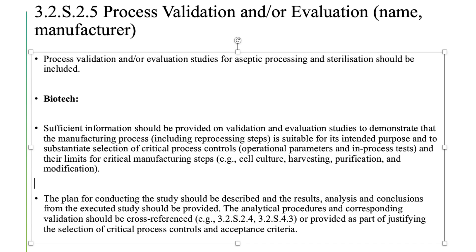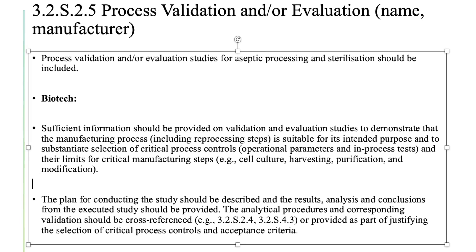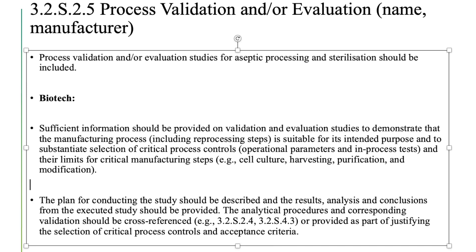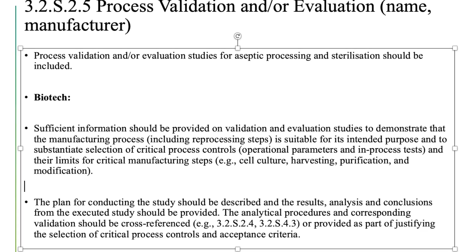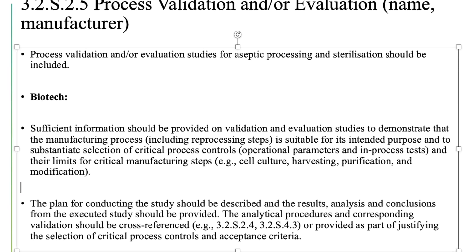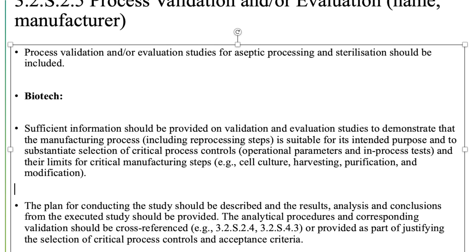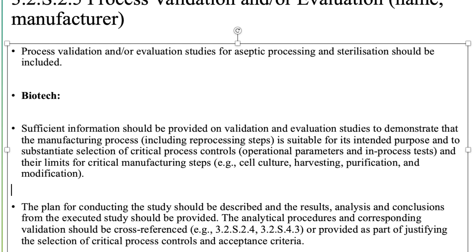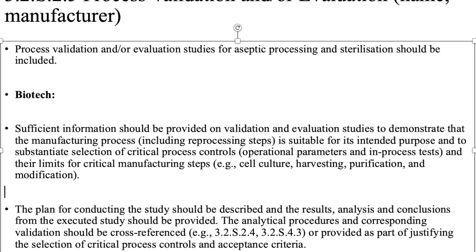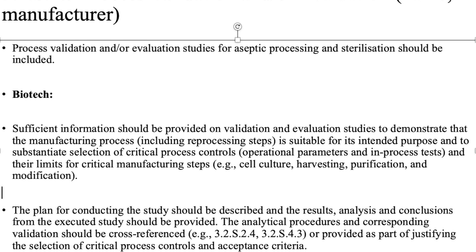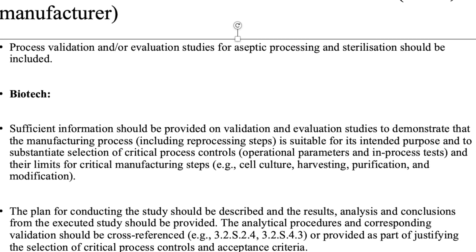3.2.S.2.5 Process Validation and/or Evaluation (Name, Manufacturer): Process validation and/or evaluation studies for aseptic processing and sterilization should be included. For biotech, sufficient information should be provided on validation and evaluation studies to demonstrate that the manufacturing process, including reprocessing steps, is suitable for its intended purpose and to substantiate selection of critical process controls, operational parameters, and in-process tests and their limits for critical manufacturing steps — for example, cell culture, harvesting, purification, and modification. The plan for conducting the study should be described, and analysis and conclusions from the executed study should be provided. The analytical procedures and corresponding validation should be cross-referenced, for example, 3.2.S.2.4 and 3.2.S.4.3, or provided as part of justifying the selection of critical process controls and acceptance criteria.